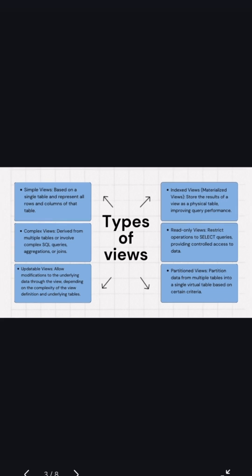Updatable views allow modification to the underlying data through the view, depending on the complexity of the view definition and underlying tables. Indexed views, also known as materialized views, store the results of a view as a physical table, improving query performance.